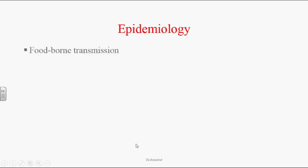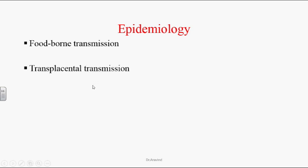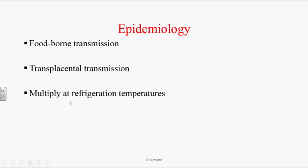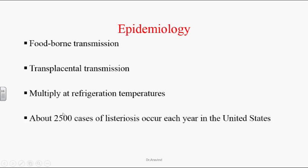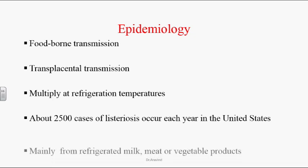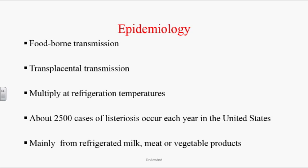Epidemiology: These organisms are transmitted majorly by food. There is transplacental transmission from mother to fetus. These organisms multiply at refrigeration temperatures. About 2,500 cases of listeriosis occur each year in the United States, mainly transmitted through refrigerated milk, meat, and vegetable products.